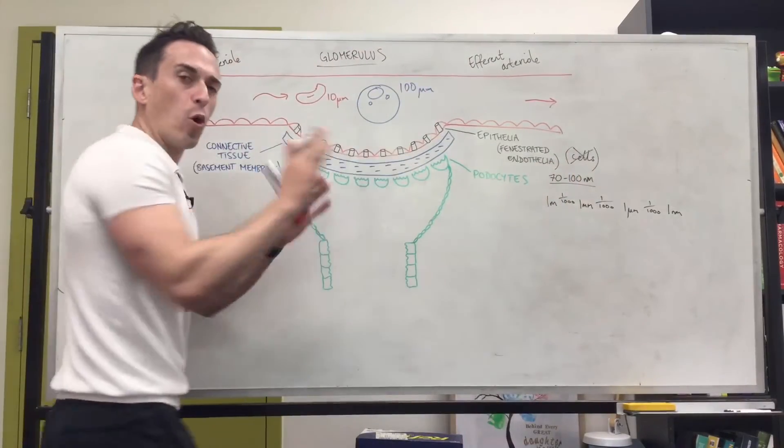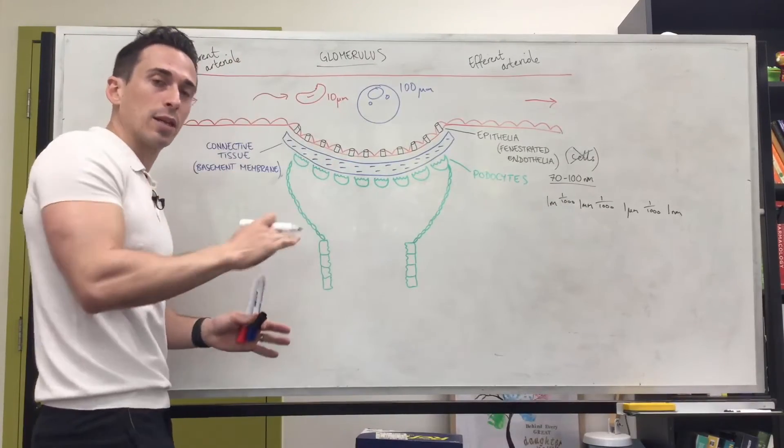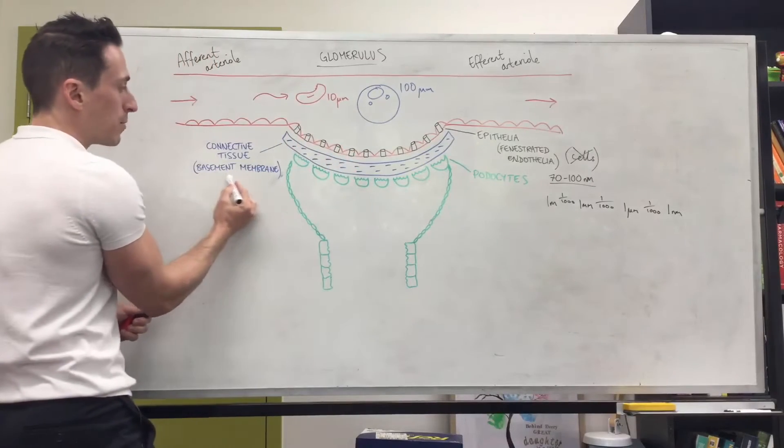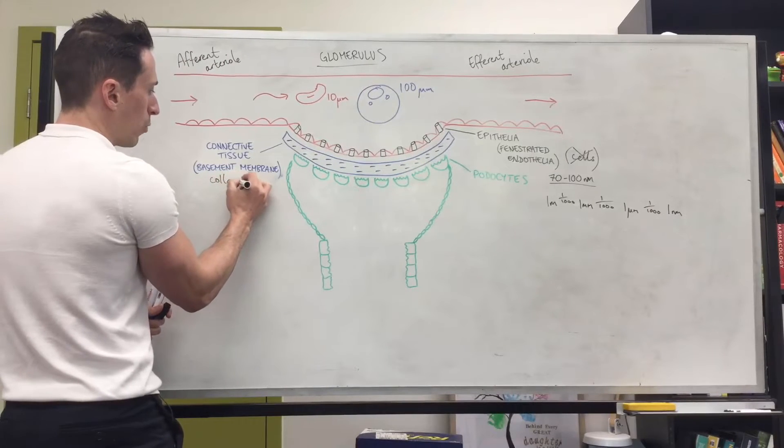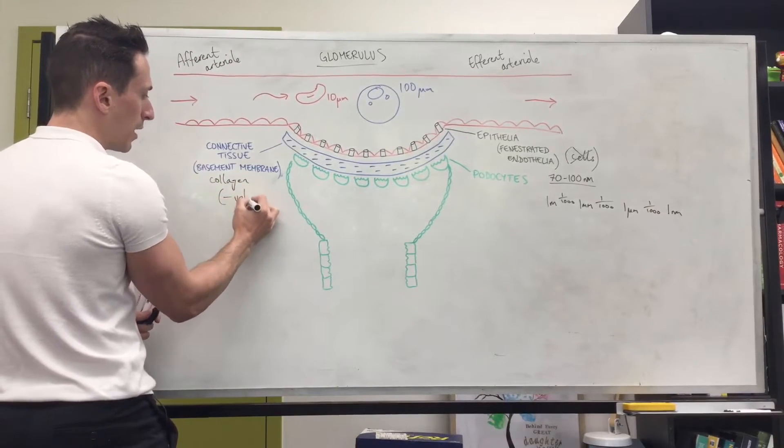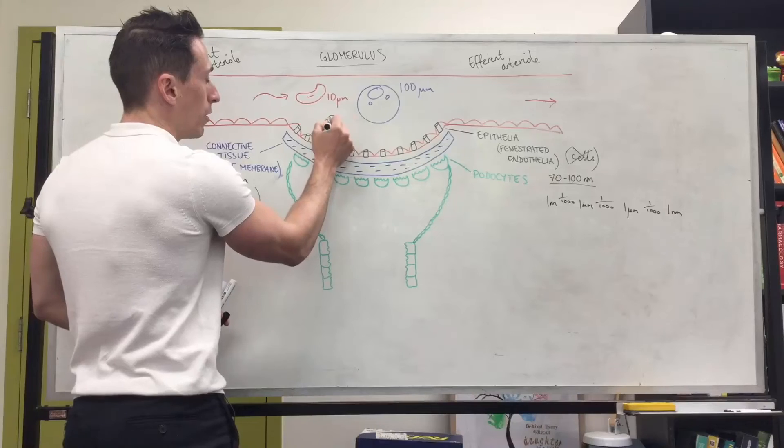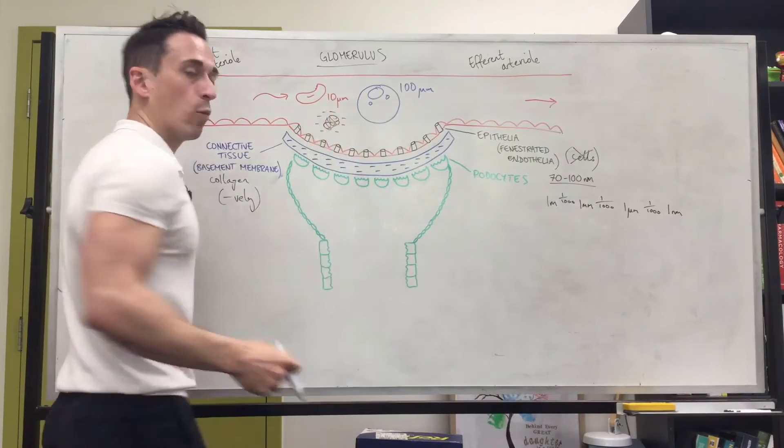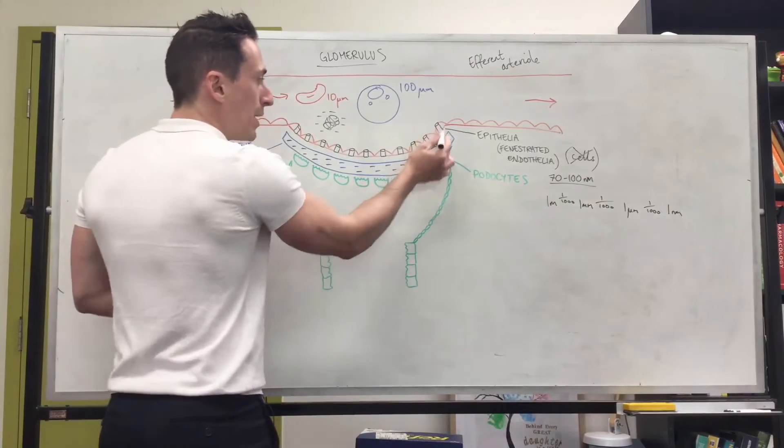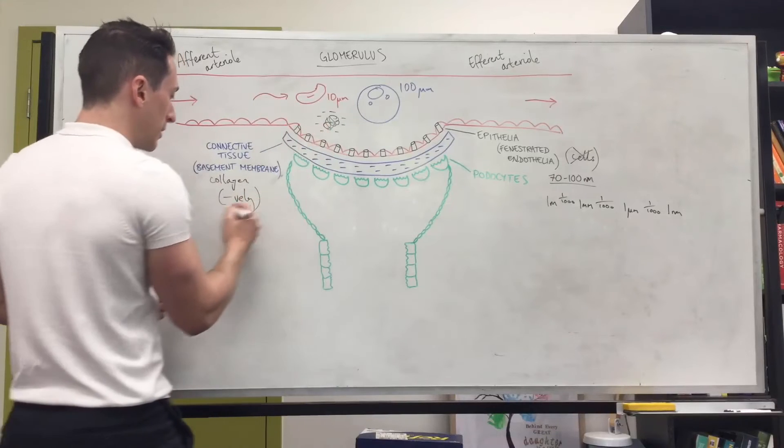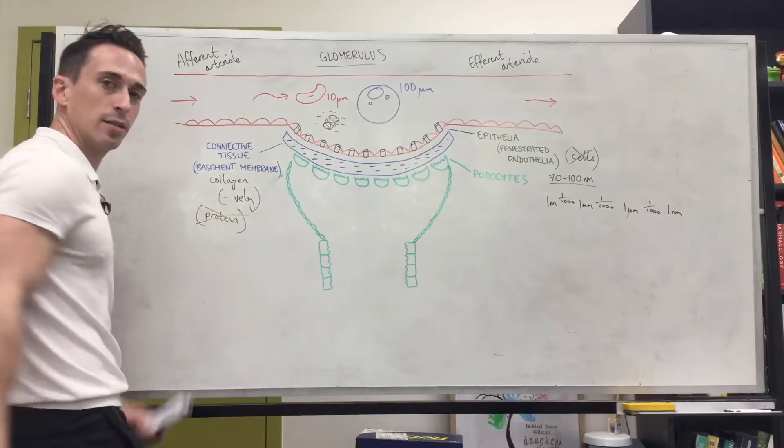Now the next one, remember all epithelias sit on top of connective tissue. That's just what it is all throughout the body. All endothelias sit on connective tissue. The connective tissue here called the basement membrane is filled with collagen. And one thing you should know about collagen, it's negatively charged. Now, this is important because proteins, which are going to be floating through, also are negatively charged. And what do we know about like charges? They repel each other. So the basement membrane being negatively charged because of collagen repels proteins. This is the protein membrane. Doesn't let proteins through.